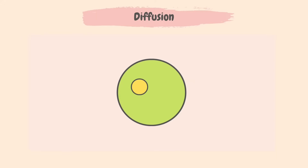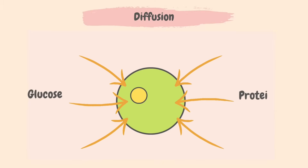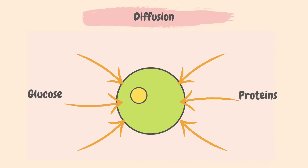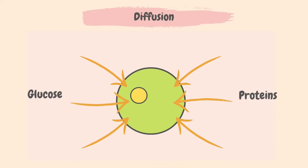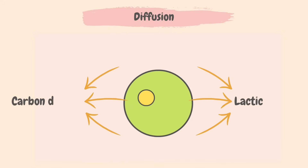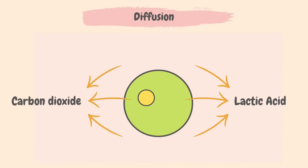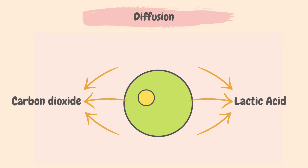Let's take a look at diffusion first. Diffusion is quite often how molecules move in and out of our cells through the cell membrane. The cell membrane controls what substances enter and exit the cell. Molecules that our cells need, such as glucose and proteins, move into the cell for use in metabolic reactions and storage. Waste products such as carbon dioxide and lactic acid are transported out into the blood to be excreted from the body.